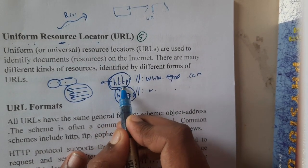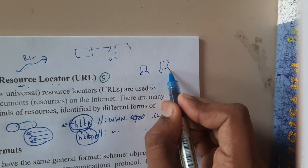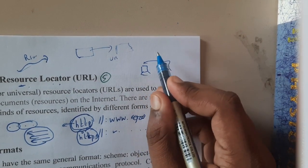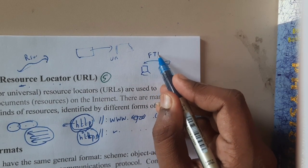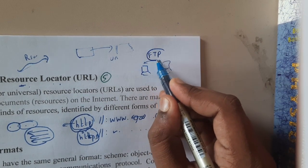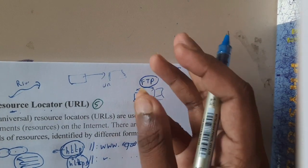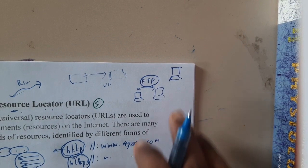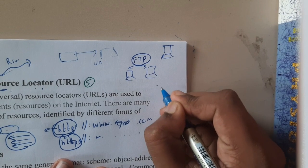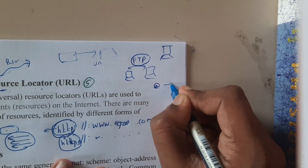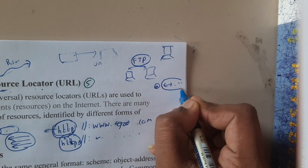Whereas if you are running a server and you are transferring files from one server to another server, here you will be following the protocol called FTP. Similarly, if you are running a mail server - Gmail and all those things - even when you are an owner of a company having your own email server, some colleges will be having their own domain like @companyname.com instead of gmail.com.